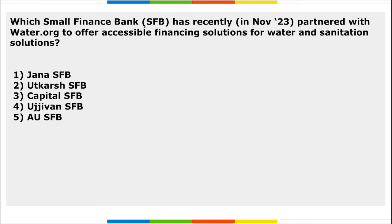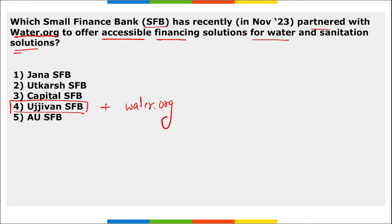Next: which small finance bank has recently partnered with Water.org to offer accessible financing solutions for water and sanitation? It is Ujjivan Small Finance Bank. They have recently partnered with Water.org to offer accessible financing — basically providing loans at lower interest rates for water and sanitation solutions to develop infrastructure.